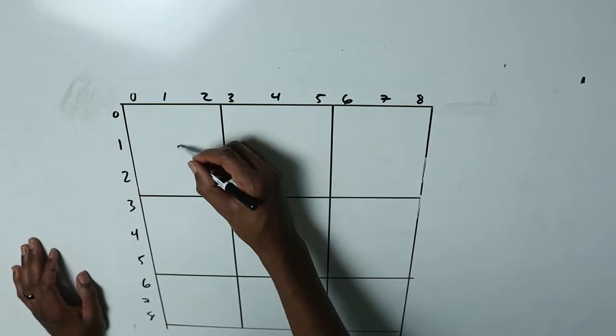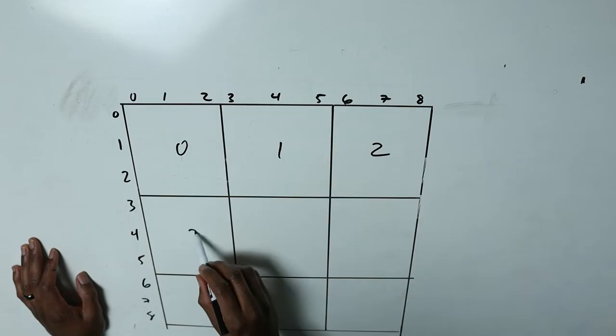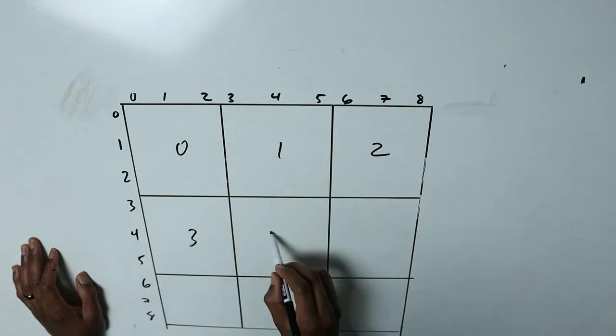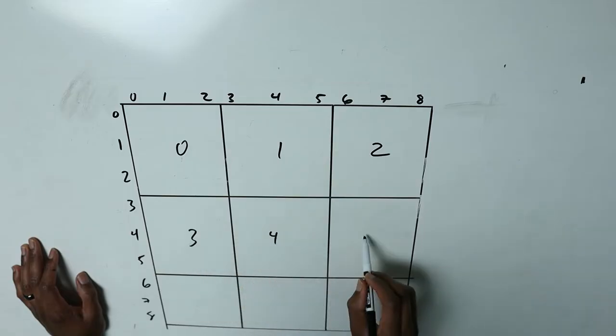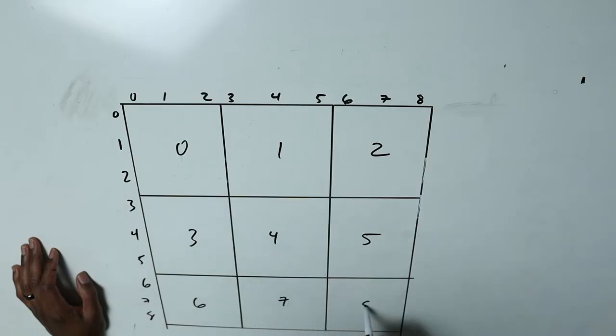From the top row we're going from box index zero, one, two. From the mid row we go from three, four, five. The bottom row would be six, seven, eight. So we know the top row covers three columns before going to the mid row.